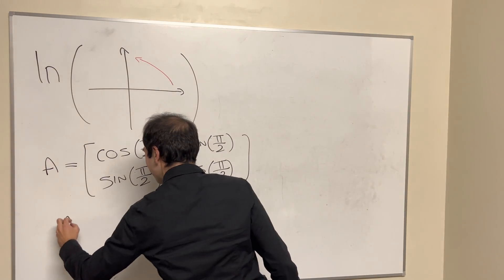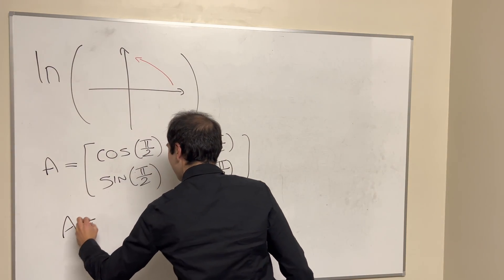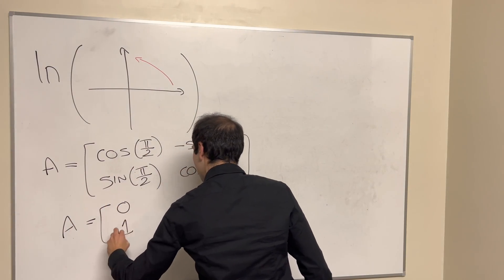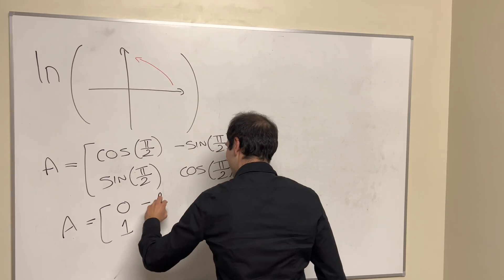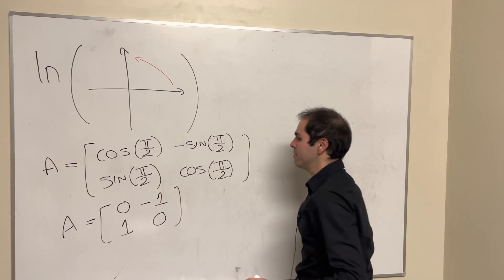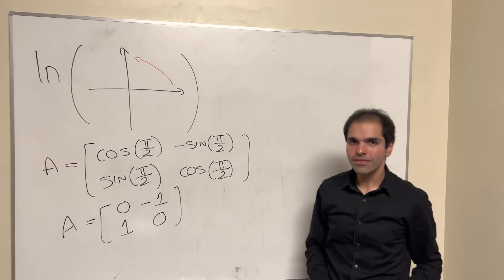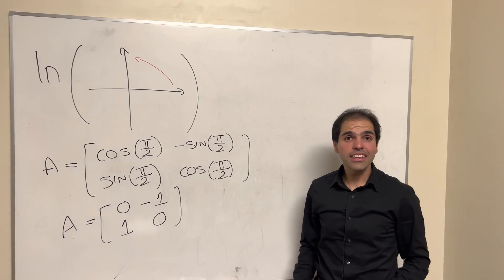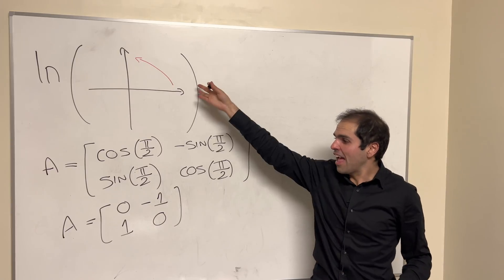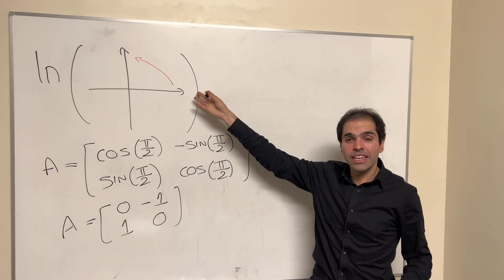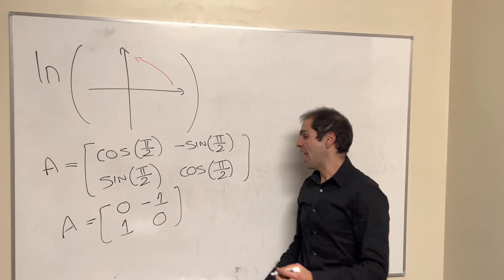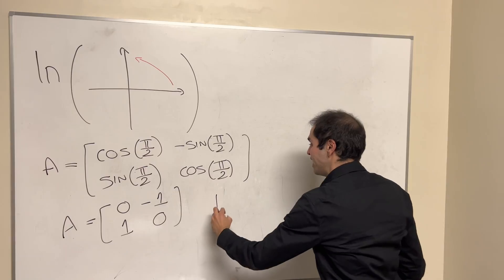This simplifies quite nicely to matrix A, which is [[0, -1], [1, 0]]. And in order to find ln of that rotation, all we need to do is find ln of that matrix.